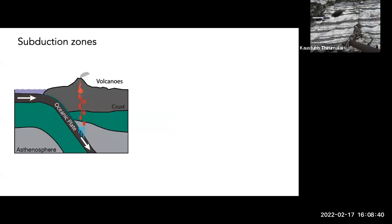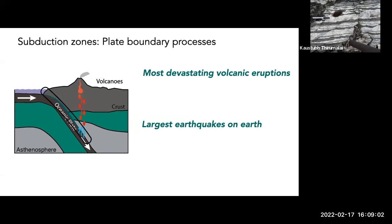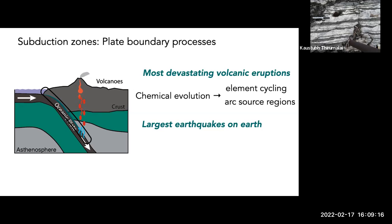We're all familiar with this cartoon of subduction zones, where we have an oceanic plate subducting underneath an overriding plate. These zones host the most devastating volcanic eruptions on Earth and the largest earthquakes on Earth, so there are huge geologic hazards associated with subduction zones. I'll argue that processes happening on the plate boundary are really influencing both of these geologic hazards — the chemical evolution of the plate interface influences element cycling, and how rocks flow or break influences seismic behavior.